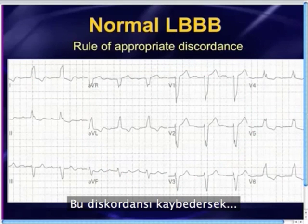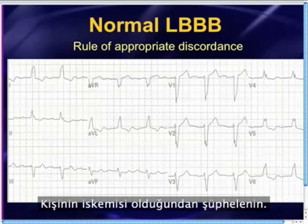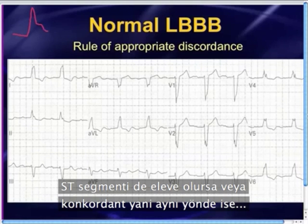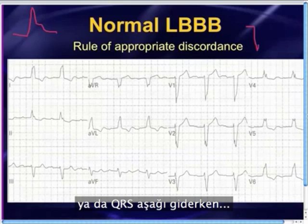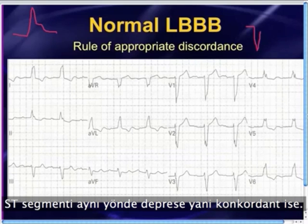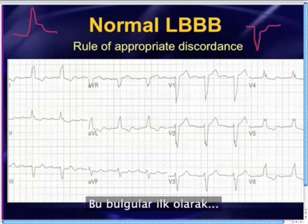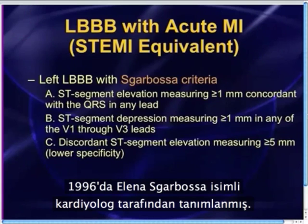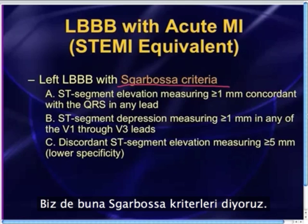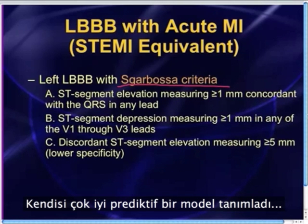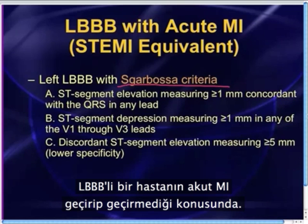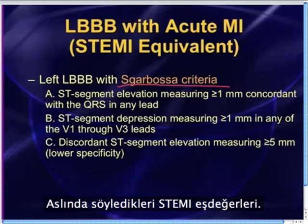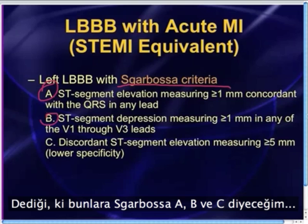If you lose that discordant relationship, you have to worry that the person may be having ischemia. In other words, if the QRS goes up and the ST segment is also elevated — concordant, same direction — or if the QRS goes down and the ST segment is depressed in the same direction, those are concerning. These findings were first described back in 1996 by cardiologist Elena Sgarbossa, and we now refer to this as the Sgarbossa criteria — a very nice predictive model for when a person with left bundle is having an acute MI, essentially a STEMI equivalent.